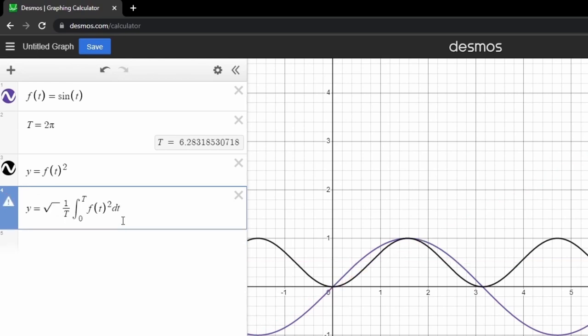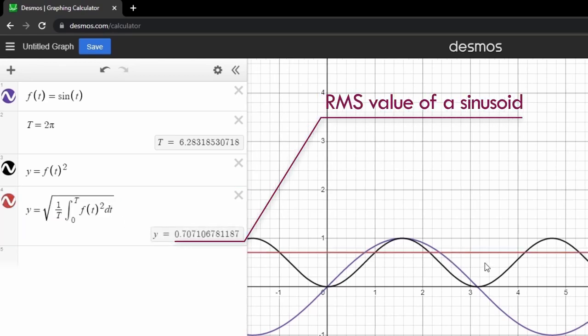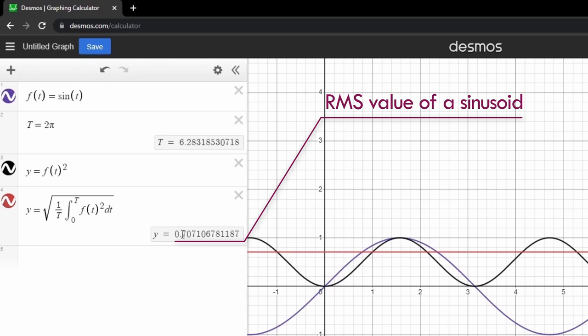Finally, we take the root or the square root of the right hand side, and we get the final result. The RMS value of a period of a sinusoid is around 0.707, which is basically the peak value, which is 1 in this case, divided by root 2. This is applicable for all sinusoids. For all sinusoids, the RMS value is 1 over root 2 of the peak value.